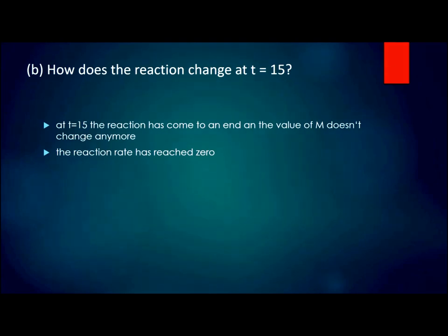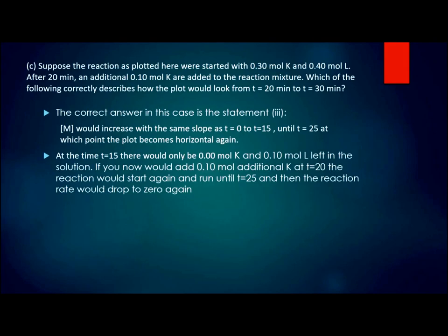For part c: suppose the reaction as plotted here was started with 0.30 mole K and 0.40 mole L. After 20 minutes, an additional 0.10 mole K were added to the reaction mixture. The correct answer is statement number three — M would increase with the same slope as t0 to t15 until t25, at which point the plot would become horizontal again.